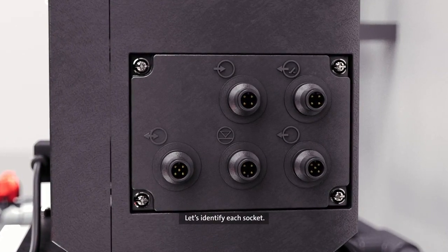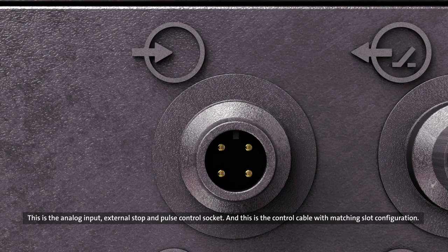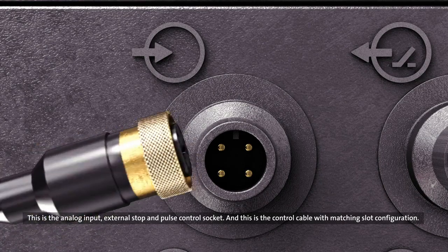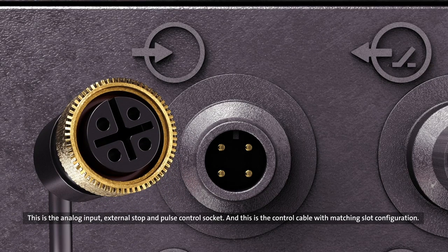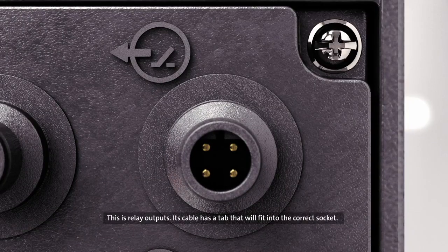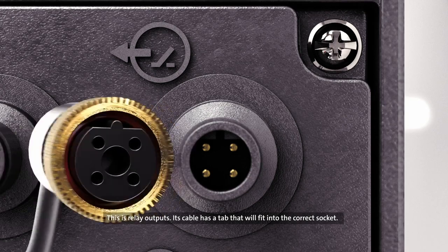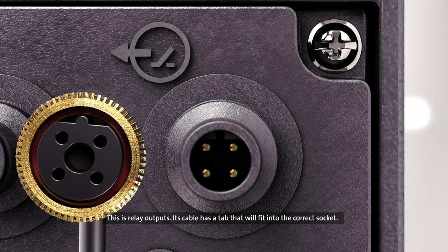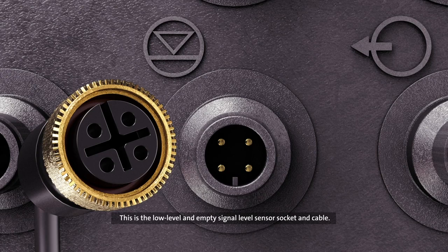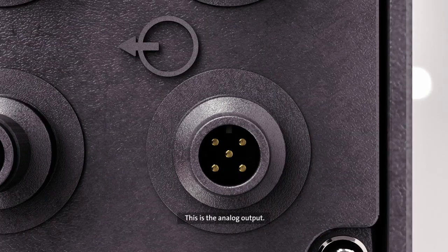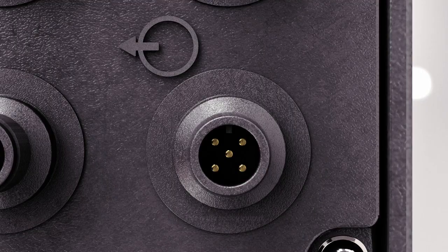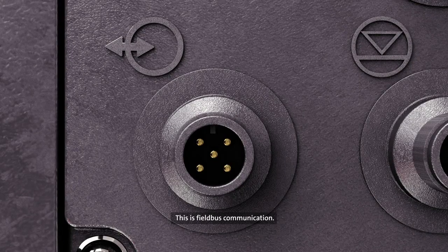Let's identify each socket. This is the analog input, external stop, and pulse control socket. And this is the control cable with matching slot configuration. This is relay outputs. Its cable has a tab that will fit into the correct socket. This is the low-level and empty signal sensor socket and cable. This is analog output. This is field bus communication.